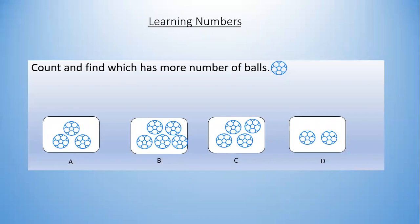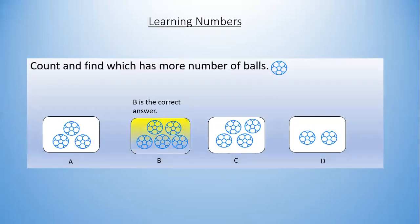Now let's do another fun activity — count and find which box has more balls. Box A: one, two, three balls. Box B: one, two, three, four, five balls. Box C: one, two, three, four balls. Box D: one, two — two balls. Which has more balls? Yes, you are right — B has five balls, so B is the correct answer!